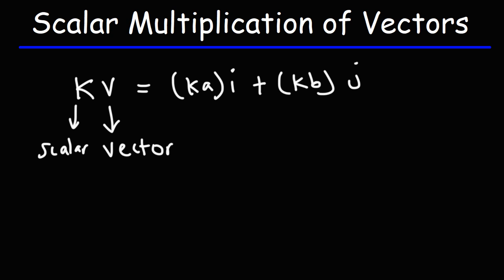So the scalar multiplication of vectors, what it really is, is just a number multiplied by a vector. So for instance, let's say we have the vector V. And let's say it's 3i minus 4j.